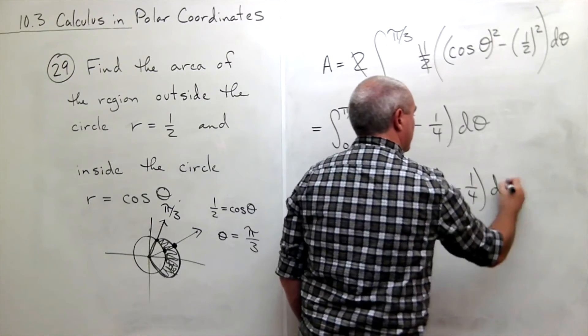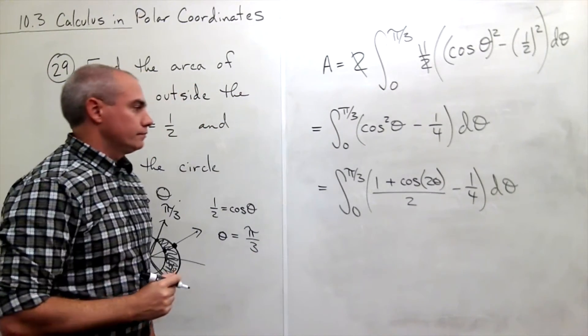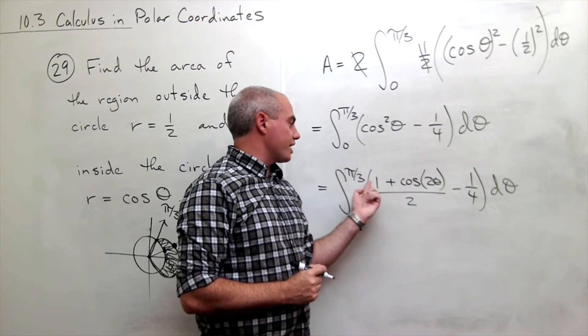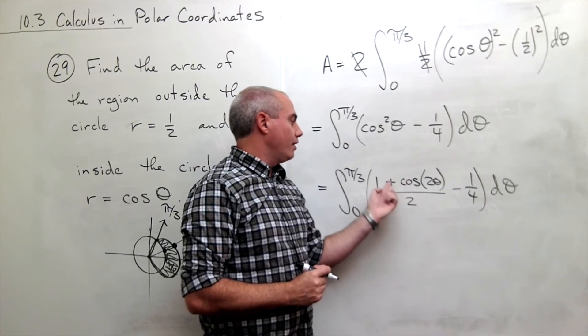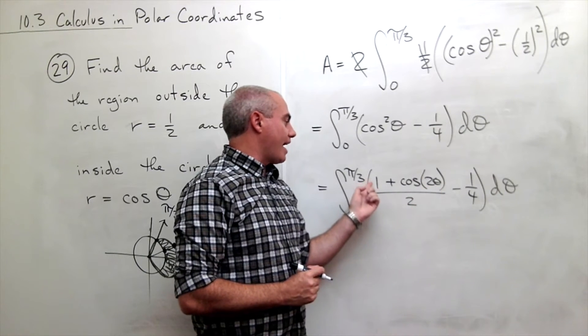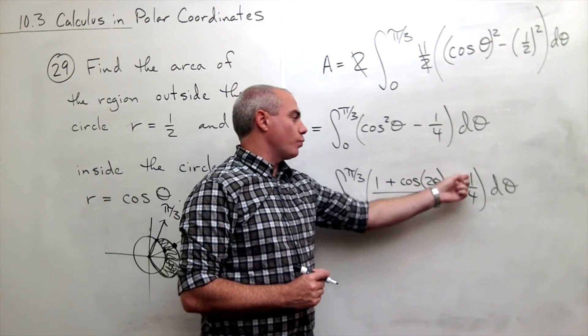All of that, all of that d theta. Alright. So this thing breaks down into two fractions. I could write this as a half plus cosine of two theta over two. But then I have one-half minus one-fourth.